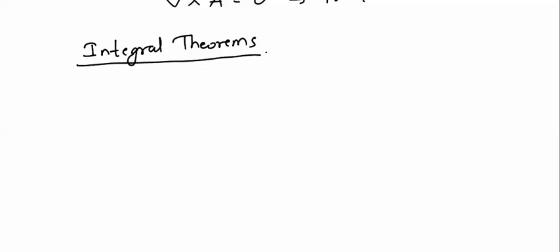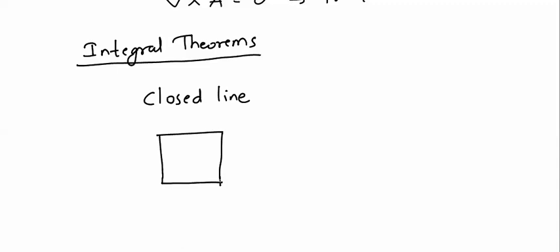Before directly giving you the theorems, I'll give you two statements. The first statement: if I consider a few lines and if I close them — so, close lines — for example if I take four lines and close them, what I am getting is a surface. So remember, a closed line gives you an open surface.